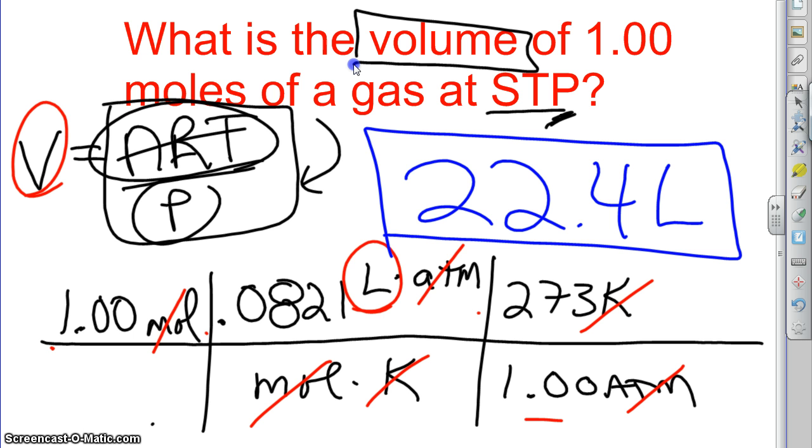That is the molar volume of a gas. So I actually didn't have to do that. I didn't have to work it out. I know that one mole of a gas at STP always occupies 22.4 liters. It's one of those shortcuts for gas law stoichiometry sometimes we use.